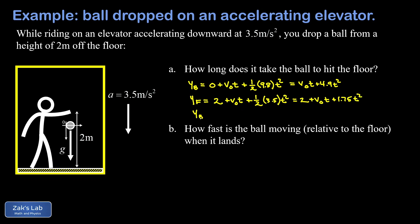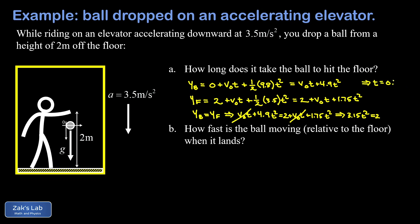We set those y-coordinates equal — when the ball hits the floor, they must share the same y-coordinate. This is where the initial velocity cancels out. Gathering t-squared terms on the left: 4.9t² − 1.75t² = 3.15t², with 2 remaining on the right. Dividing by 3.15 and taking the square root gives the time for the collision: to three significant digits, t = 0.797 seconds.